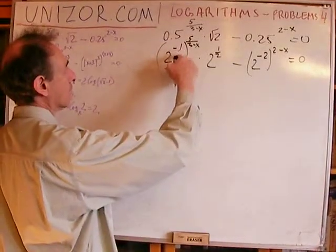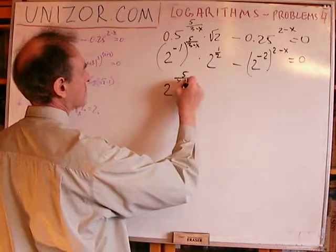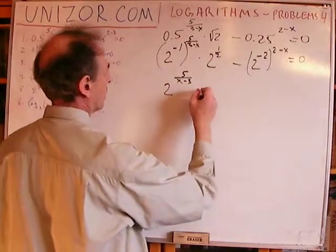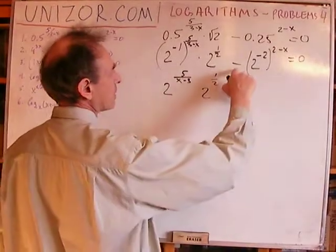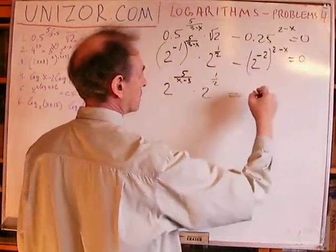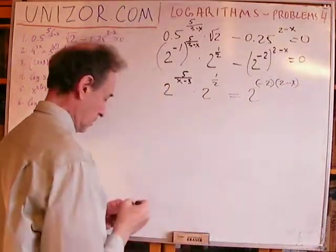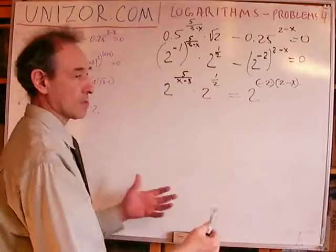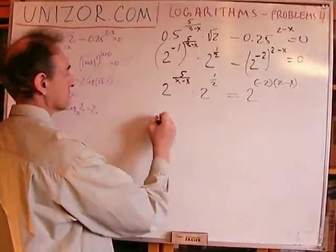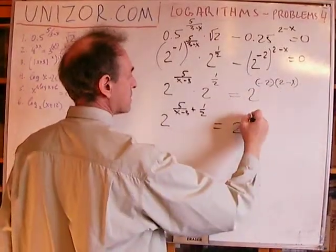When you raise to a power and then raise to another power, you multiply the powers. So it's basically 2 to the power of 5 over (x minus 3). I reverse the sign here — minus 1 times 5 over (3 minus x) is 5 over (x minus 3) — times 2 to the power of 1/2. Instead of having minus and then equals 0, I'll add this to both sides, giving 2 to the power of 2 times (2 minus x).